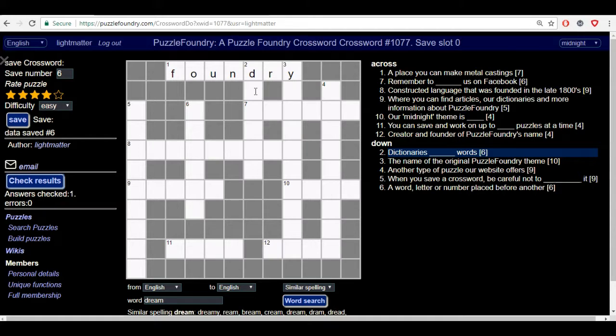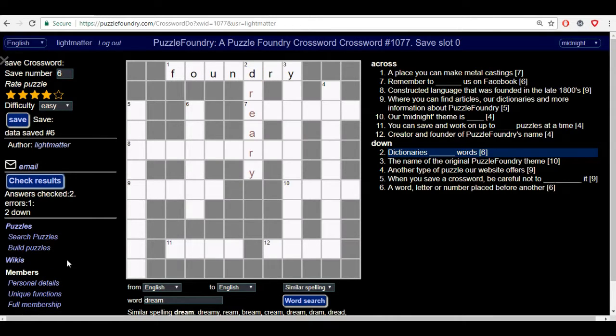But if I were to make a mistake by typing in the wrong word here, which is dreary, because they're asking you here for number 2, dictionaries words, and dreary words is obviously incorrect. But if I were to press check results, it says that it has checked 2 answers, found 1 error and it gives you the place which is 2 down.